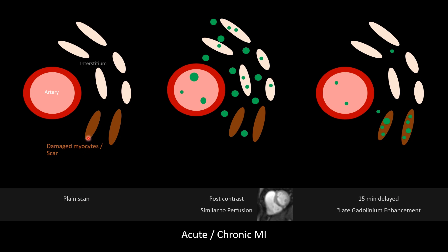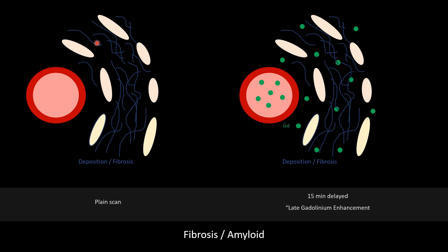In damaged myocardium, immediately after contrast everything enhances except the damaged part — similar to a perfusion image — and then that same damaged part retains contrast and appears as enhancement on LGE. In the case of diffuse fibrosis causing expansion of ECV, gadolinium is deposited in the fibrosis or interstitium, and diffuse late gadolinium enhancement can be seen, either patchy or diffuse. T1 mapping values and ECV will both be raised in such cases.